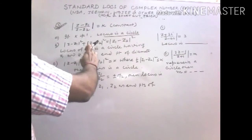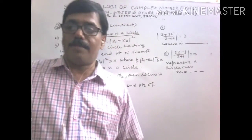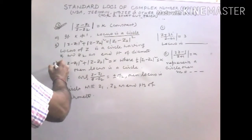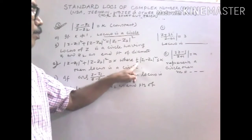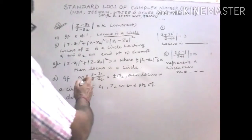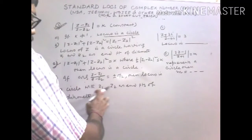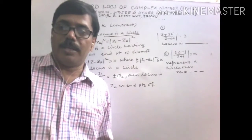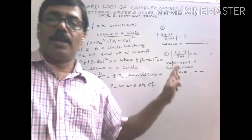Additional cases for a circle: if |Z - Z1|² + |Z - Z2|² = K, where K is greater than half of |Z1 - Z2|², then it also represents a circle. Also, if the argument of (Z - Z1)/(Z - Z2) equals ±π/2, then the locus is a circle with Z1 and Z2 as endpoints of the diameter.